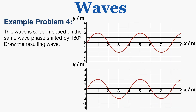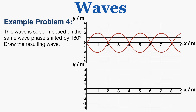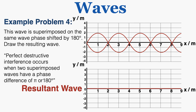Example number 4 says this wave is superimposed on the same wave phase shifted by 180 degrees — draw the resulting wave. A phase shift of 180 degrees is a shift of one half of the wavelength. After shifting, wherever one wave has a positive amplitude, the other has the same amplitude but negative, so they always perfectly cancel each other out and the resulting wave is a perfectly flat line on the x-axis. Perfect destructive interference occurs when two superimposed waves have a phase difference of π or 180 degrees.